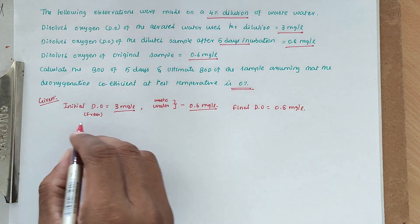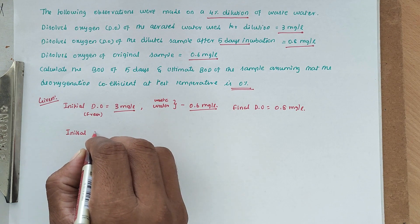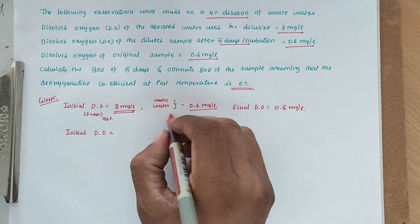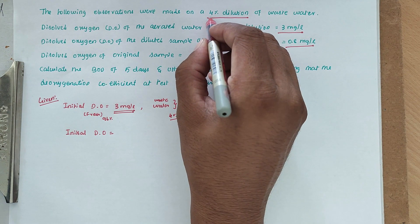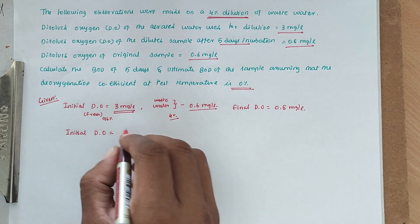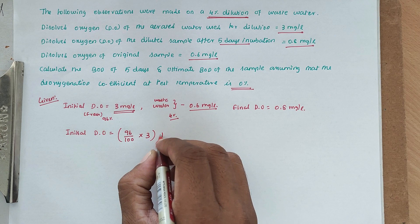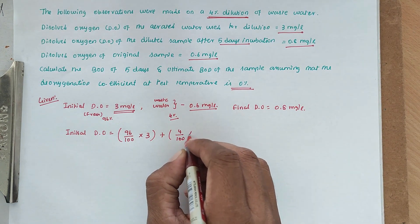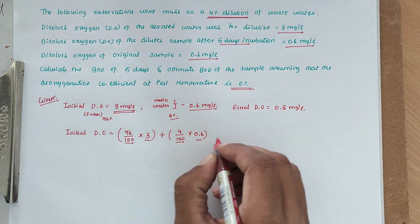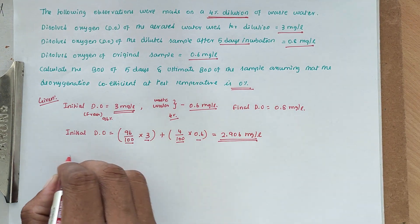Now we have to find out the initial dissolved oxygen. The sample is composed of 96% fresh water and 4% wastewater. Since a 4% dilution is given, the initial DO equals (96/100) × 3 plus (4/100) × 0.6. Calculating: 96% into 3 plus 4% into 0.6 gives us a value of 2.904 mg/L. This is the initial DO.